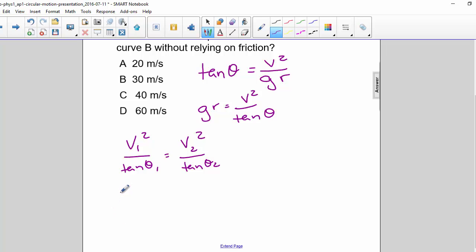So V2 squared equals V1 squared tan theta 2 divided by tan theta 1. So if we plug in our numbers, we have 30 squared times tan of 53 divided by tan of 37.